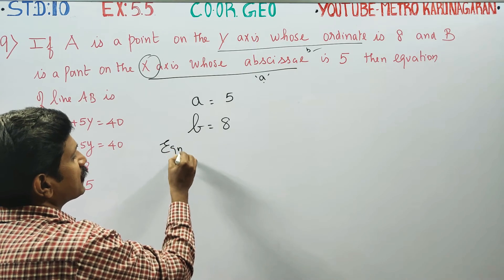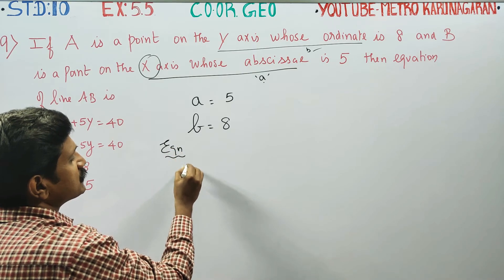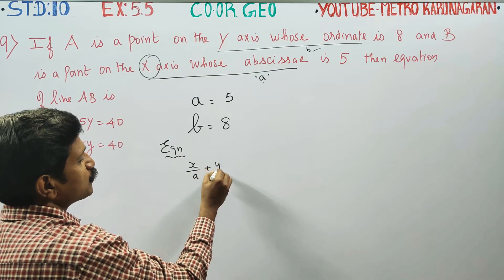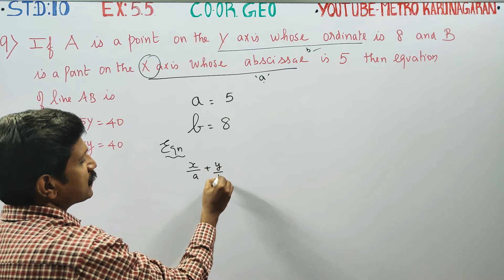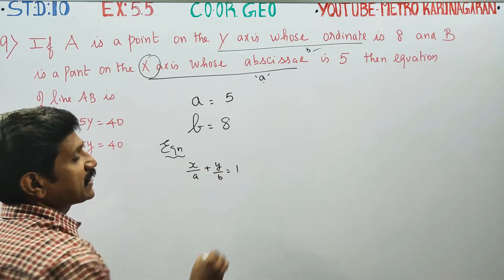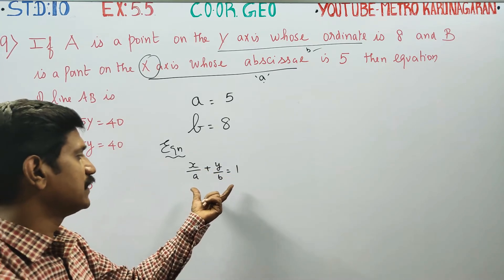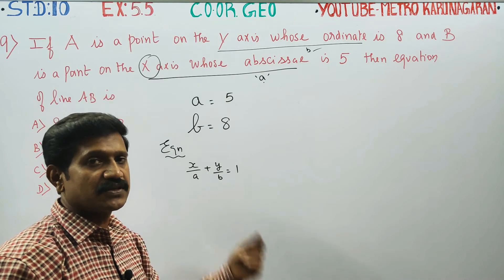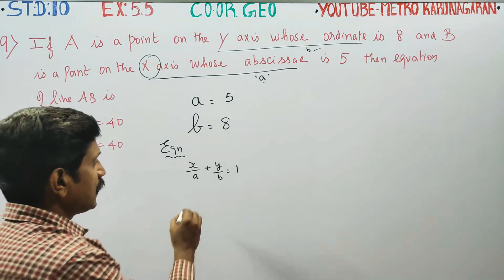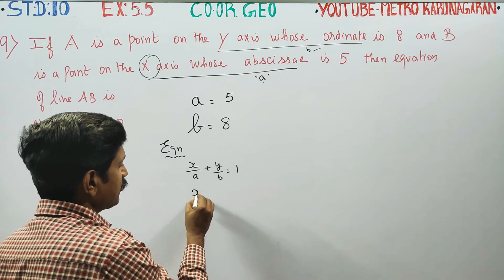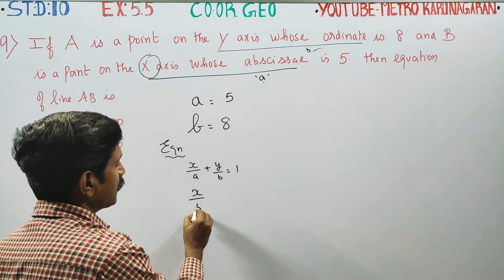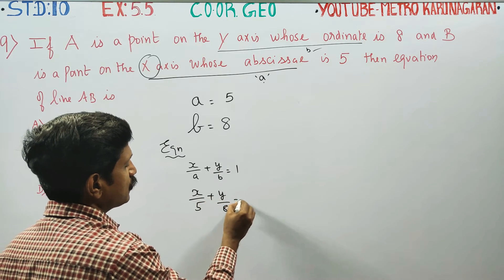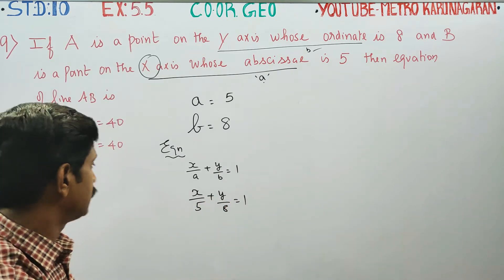The equation of a straight line using the intercept formula is: x by a plus y by b is equal to 1. This is the intercept formula — using x-intercept and y-intercept. Substituting: x by 5 plus y by 8 is equal to 1. This is the equation.